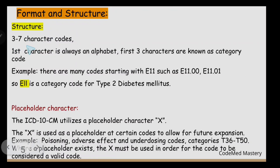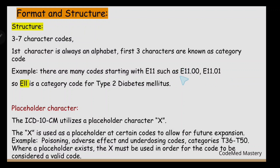Next is format and structure. ICD-10-CM codes are three to seven character codes. The first character is always an alphabet, and the first three characters are known as category codes. For example, E11 is the category code for Type 2 Diabetes Mellitus — codes such as E11.00 and E11.01 all share this category code.